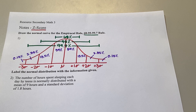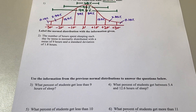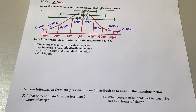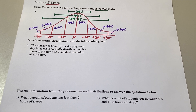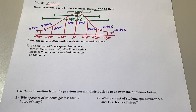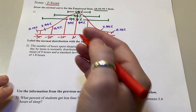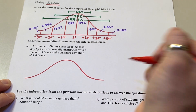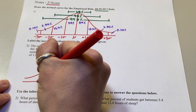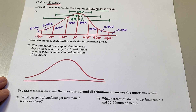There's our normal curve with the percentages that you can always refer to because they never change. Now let's draw it one more time, this time changing the axis on the bottom with real context. We're told: the number of hours spent sleeping each day by teens is normally distributed with a mean of 9 hours and a standard deviation of 1.8 hours. Go ahead and draw your normal bell curve.